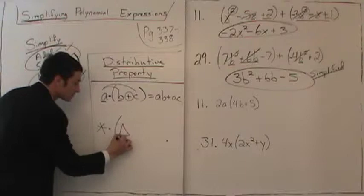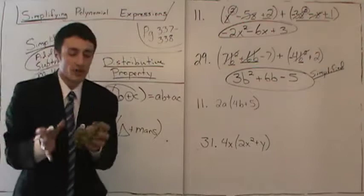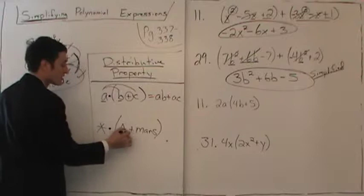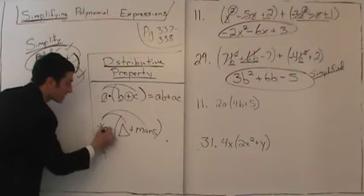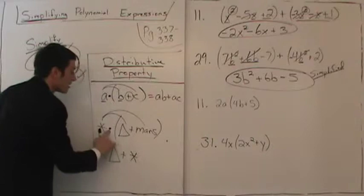What is star multiplied by the quantity triangle plus Mars? It does not matter what you're looking at — whenever multiplication meets addition, distributive property applies. So we get star times triangle plus star times Mars. When multiplication meets addition, distributive property always applies.